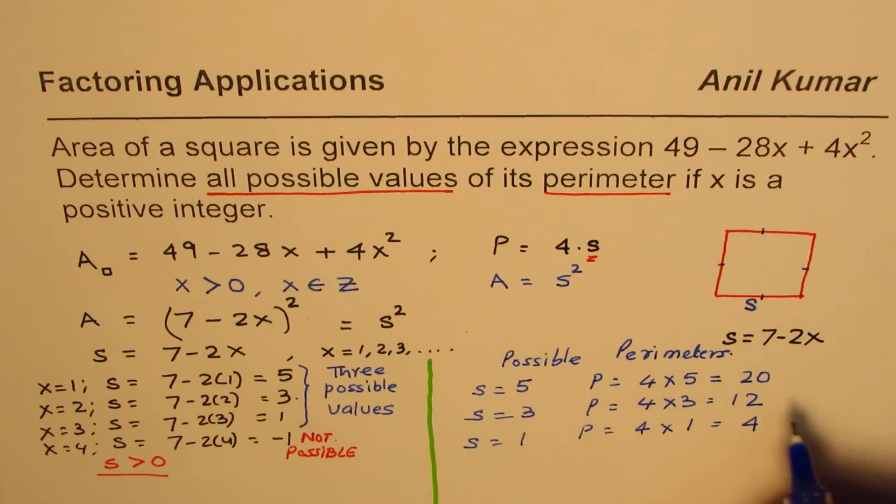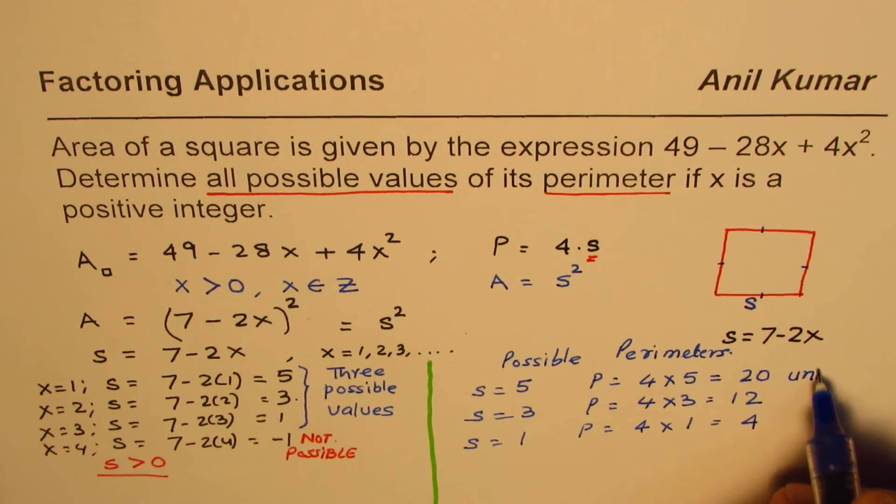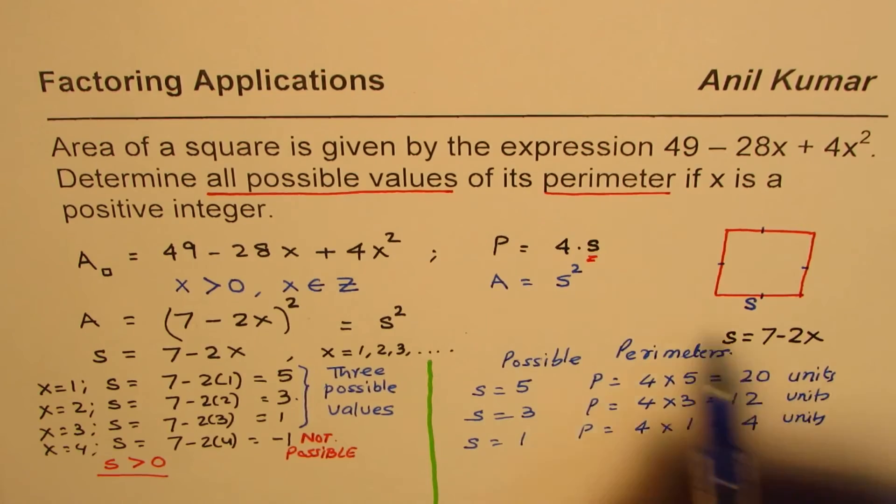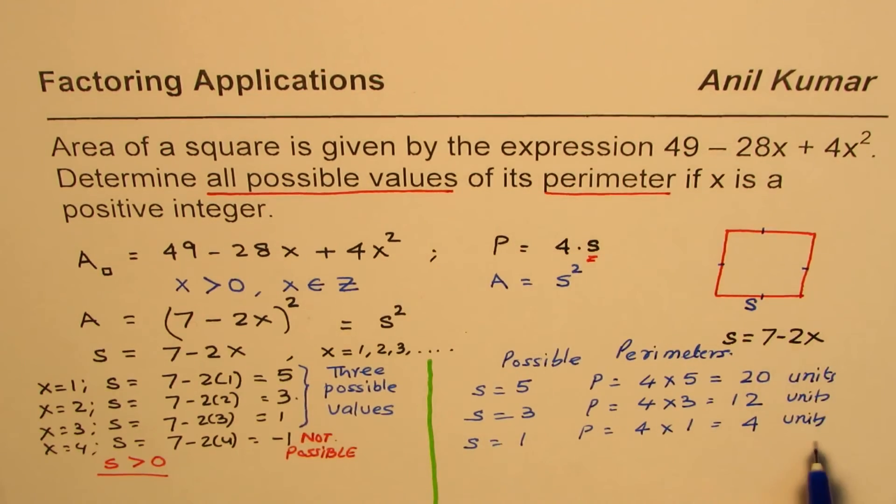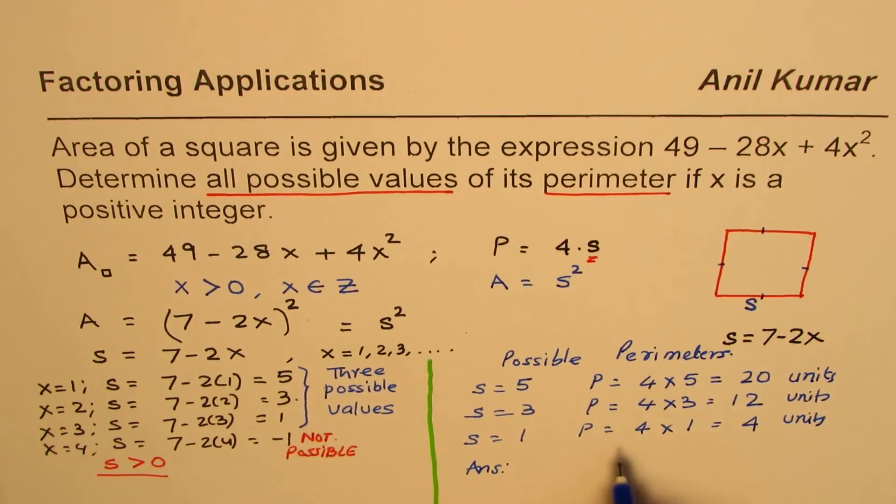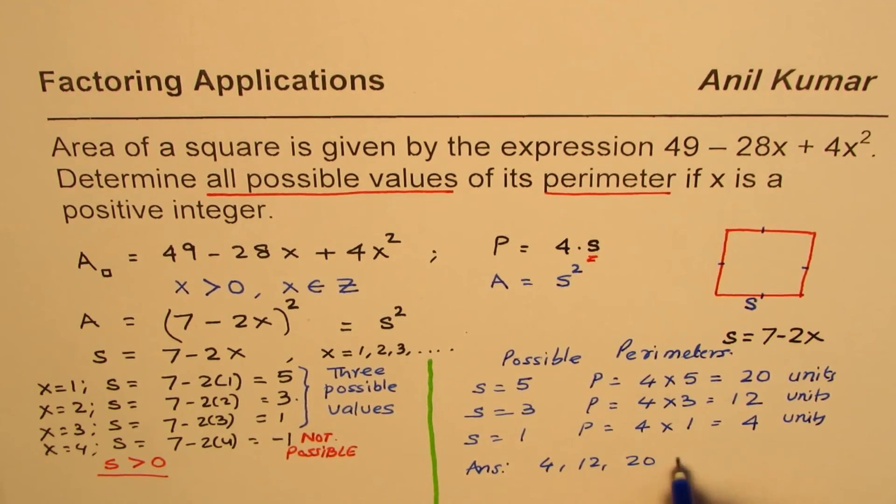Since we are not given any specific units here, we'll just write units. Whatever units are there for the area, based on that, we'll get some units. So our answers are, for perimeter, it could be 4, 12, or 20 units.